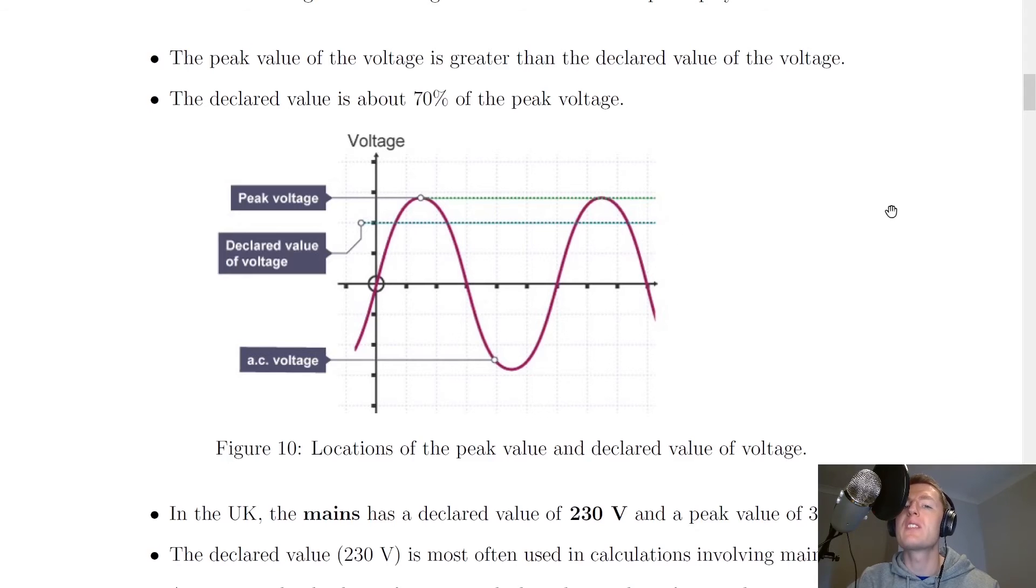So what we mean by these terms is if you plug something into the wall to get alternating current, then there is a maximum voltage you can get across your device, which is called the peak voltage. But it's not very often that you'll get that maximum voltage across your device. You're more likely to get the declared value of the voltage across your device. So a good way of thinking about declared value is almost like an average value when you plug something into the wall. And that's because remember, the voltage is going to be changing for alternating current.